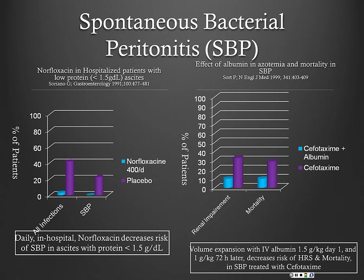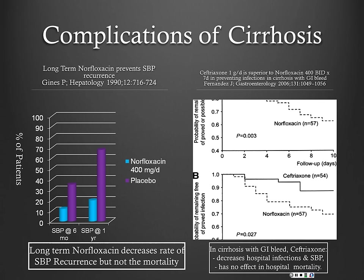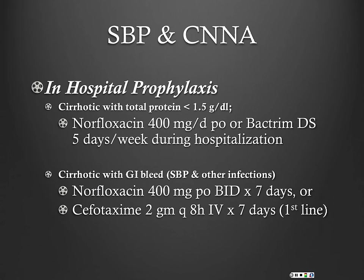Long-term norfloxacin decreases the rate of SBP recurrence but not mortality. Regarding ceftriaxone — as I talked about in the GI bleed lecture — the first thing you need to do in a patient with a GI bleed is put them on antibiotics. That's probably the most important intervention, even though there's not good data that it decreases in-hospital mortality. In-hospital prophylaxis: for a patient with total protein less than 1.5, we now use cipro or levo — Cipro 500 or Levaquin 500 — or even Bactrim DS five days a week during hospitalization.